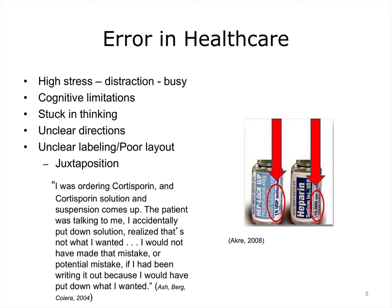Let's think about the ASH article — you can find the link to it in the references. It is a terrific article for this unit where the terms 'juxtaposition' and 'unclear directions' were introduced. This article talks about clinicians who frequently committed juxtaposition errors. This error occurs when something is too close to something else on the screen and the wrong option is too easily clicked. Add a small font size and clustering of drugs with similar names, and juxtaposition errors result. One clinician stated: 'I was ordering Cortosporin, and Cortosporin solution and suspension comes up. The patient was talking to me. I accidentally put down solution, realized that's not what I wanted. I would not have made that mistake if I had been writing it out, because I would have put down what I wanted.'